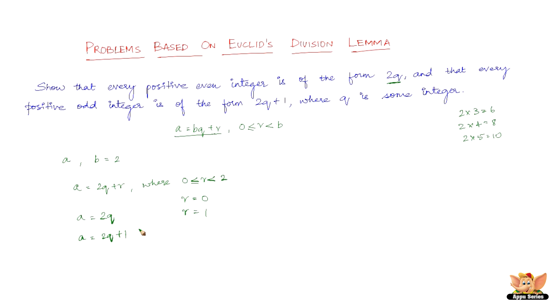So a equals 2q or a equals 2q plus 1. And I've also shown you even before we started the problem how a equals 2q is just an even number, and a equals 2q plus 1 is an odd number.